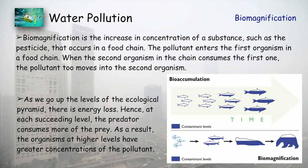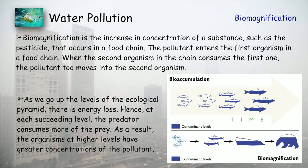Biomagnification is the increase in the concentration of a substance, such as a pesticide, that occurs in a food chain. Pollutants enter the first organism in a food chain; when the second organism consumes the first, the pollutant moves into the second organism. As we move toward higher levels in the food chain, the concentration of the pollutant increases and accumulates — this is called bioaccumulation. Organisms at higher levels have greater concentrations of the pollutant, and this magnification is called biomagnification.